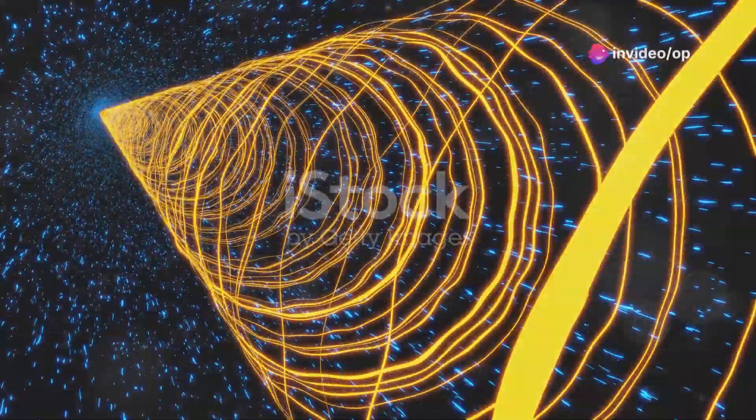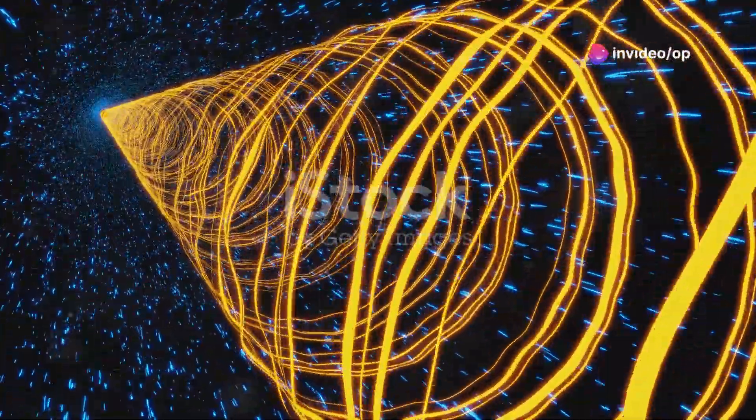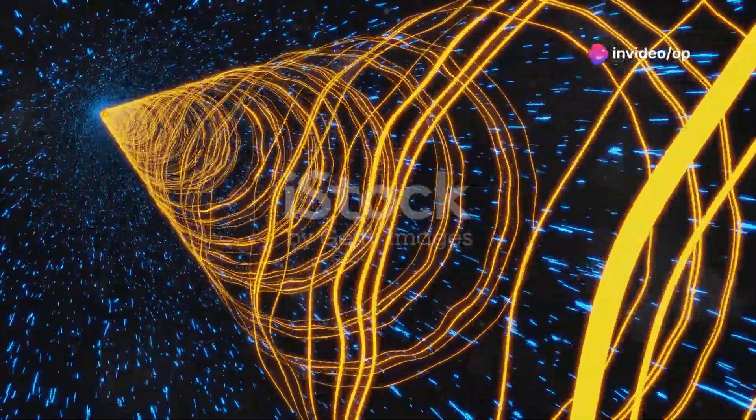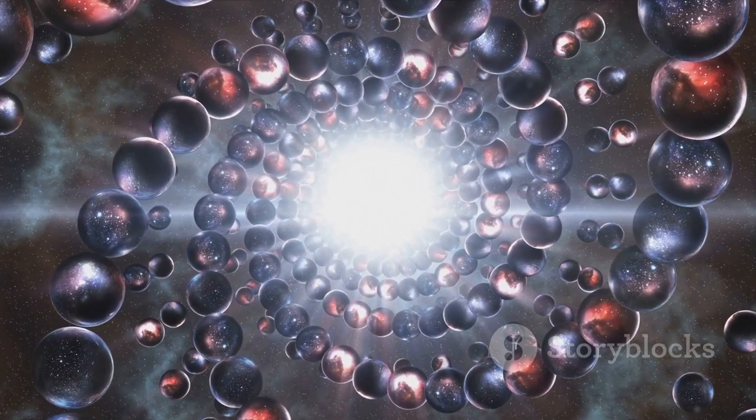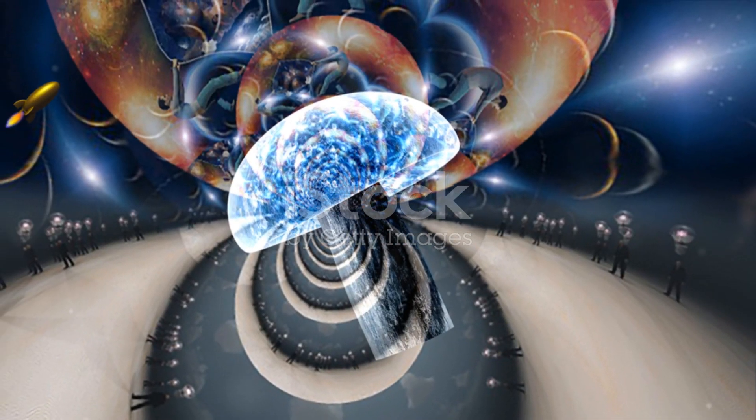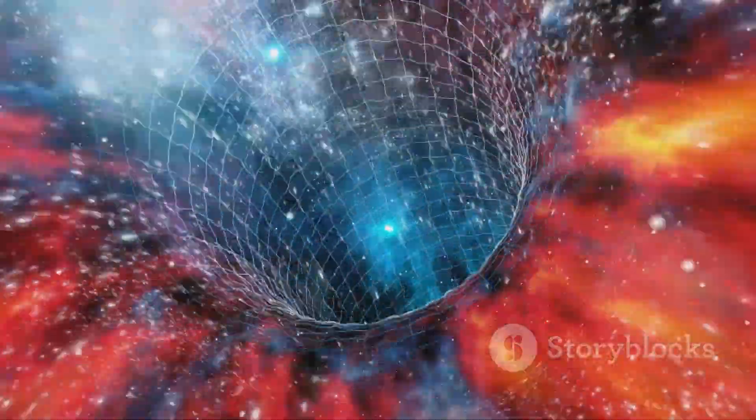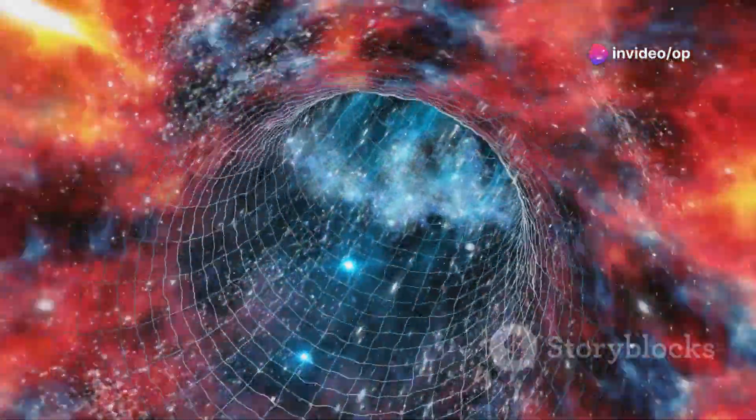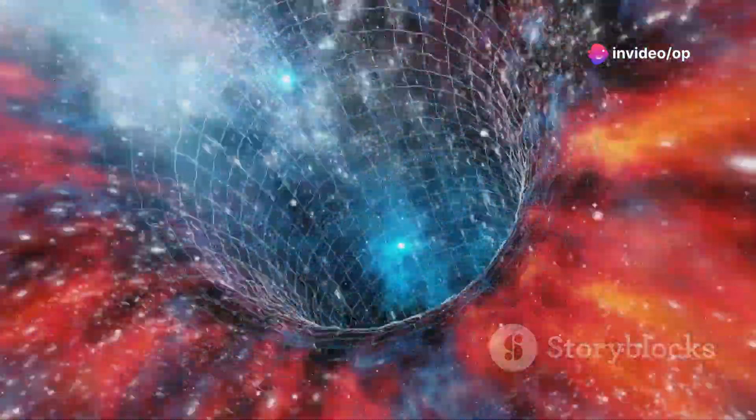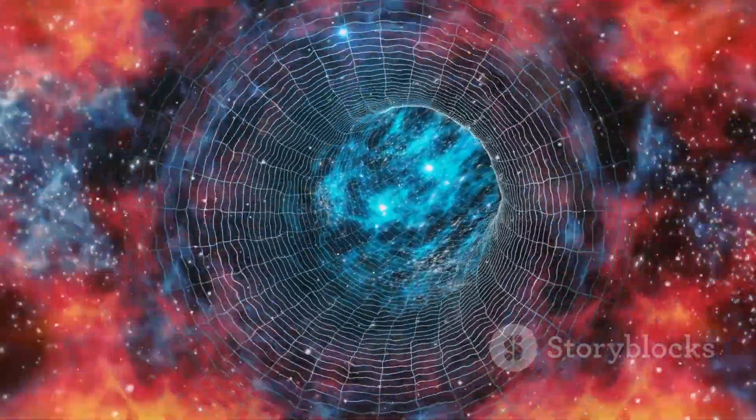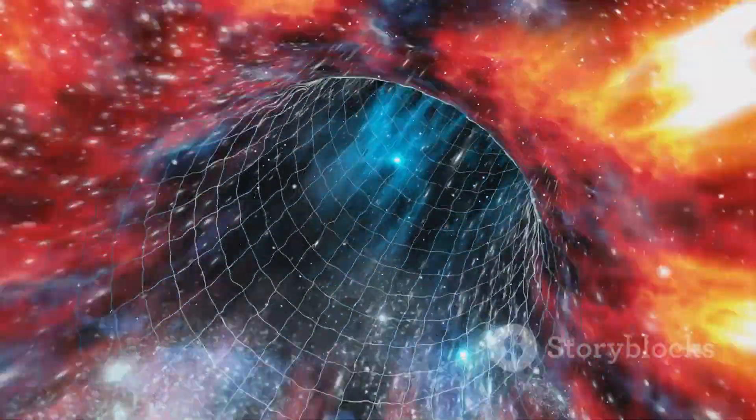Brain theory suggests that our entire universe might be situated on a membrane-like entity or brain floating within a higher dimensional expanse. This theory extends beyond our standard view of the universe, which consists of four perceivable dimensions, three of space and one of time. In brain theory, additional hidden dimensions could exist beyond those our senses can detect.